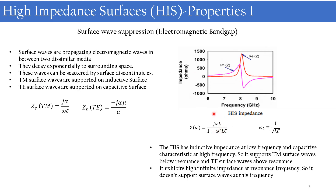At higher frequency, the impedance becomes negative, so they will support TE surface waves. But at the resonance frequency, the denominator becomes zero and Z(ω) becomes infinite. So at resonance the impedance is infinite, which indicates that this surface does not support any surface wave propagation at that frequency. This is the main characteristic — we call it the electromagnetic band gap — meaning at this band of frequency no surface waves propagate through the surface.